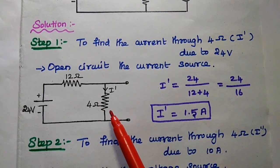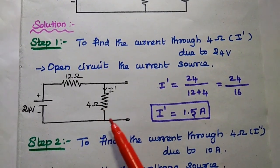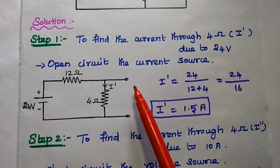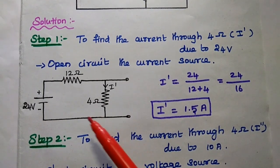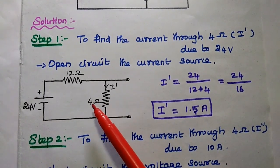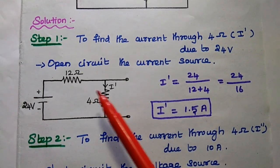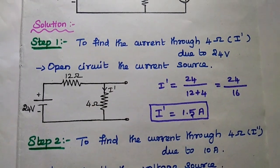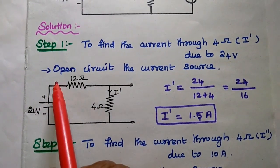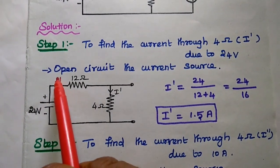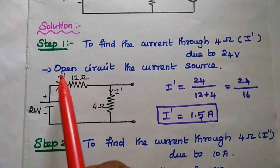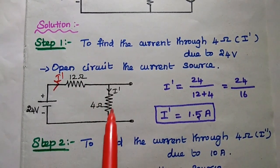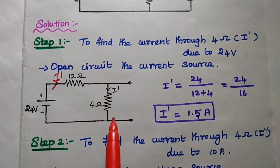The same circuit can be drawn with the current source open-circuited. Here these two resistors are in series, so we can consider the amount of current from the voltage source is flowing through this 12 ohm, which is in series with the 4 ohm resistor.